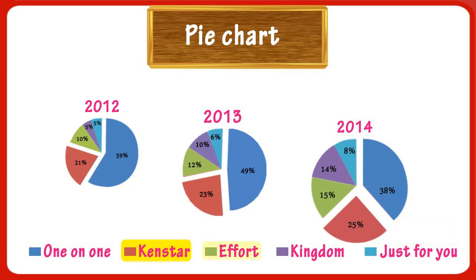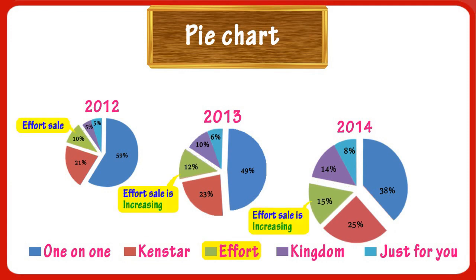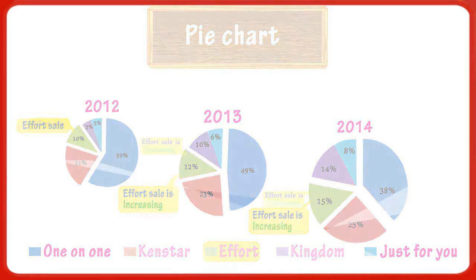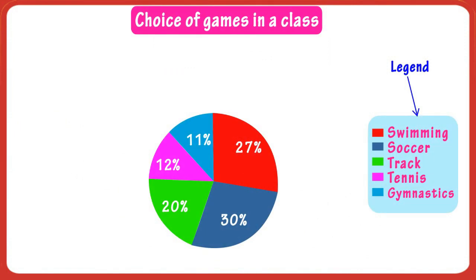More trends can be easily observed. For example, subscribers of Effort magazine are also increasing: 10% in 2012, 12% in 2013, and 15% in 2014. Here is another example of a pie chart.